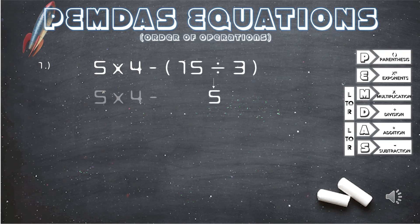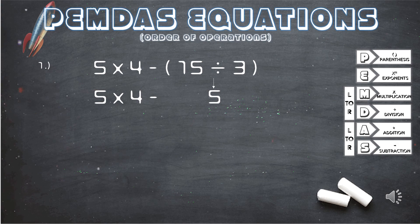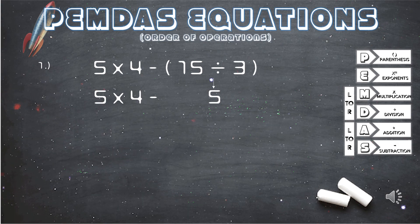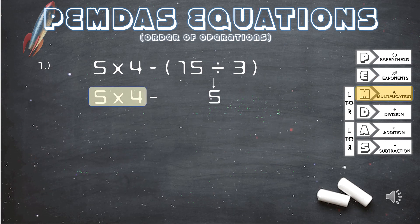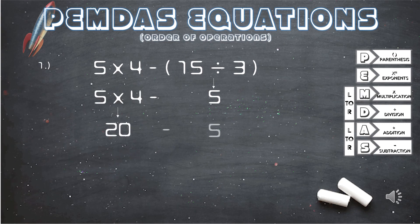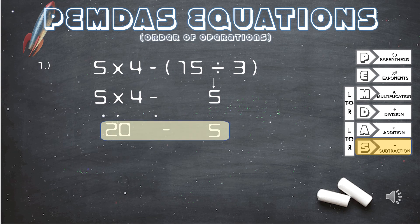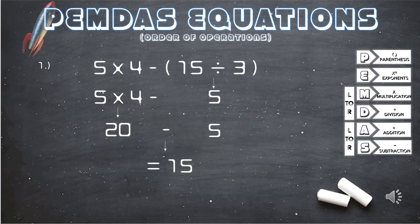We bring the rest of the equation down, and now we have the multiplication and subtraction operations. Using our guide, we know we will do the multiplication equation first. 5 times 4, which gives us 20. We bring down the 5, and we are left with 20 minus 5. And our answer is 15.